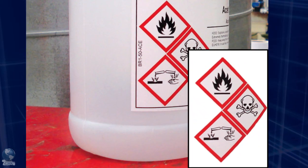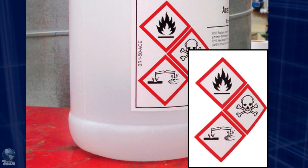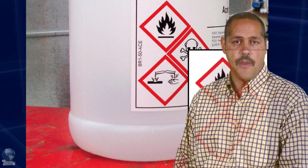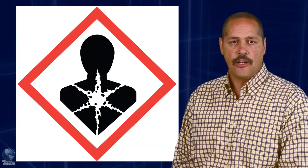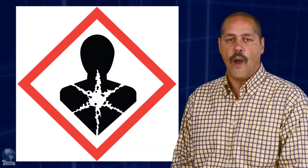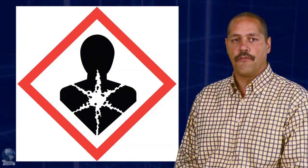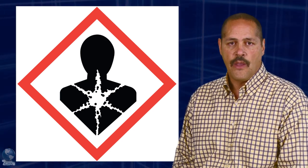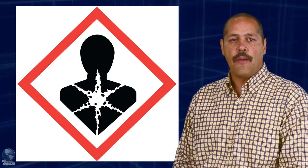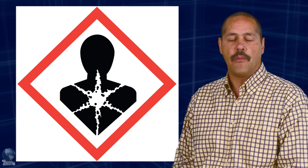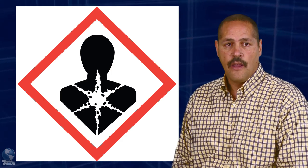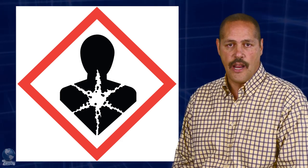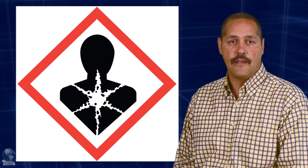The GHS will require pictograms on labels to alert users of the chemical hazards to which they may be exposed. Each pictogram consists of a symbol on a white background framed within a red border and represents a distinct hazard. The pictogram on the label is determined by the chemical hazard classification. There are eight pictograms required by the new standard and one that is optional.